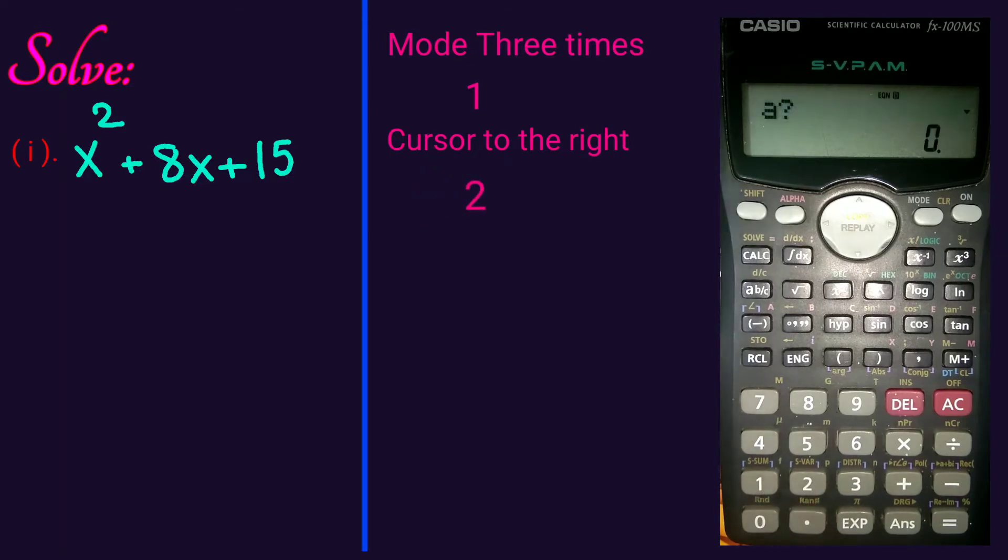So, select 2 degree. Compare x square plus 8x plus 15 with the general form of the quadratic equation: ax square plus bx plus c.